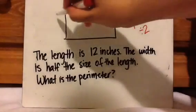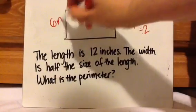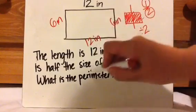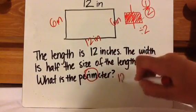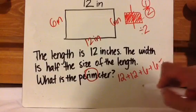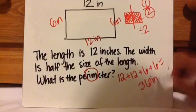So if I have 12, 12 divided by 2 is 6. And remember, they want perimeter, so I have to go all the way around. Distance all the way around. So 12 plus 12 plus 6 plus 6 equals 36 inches.